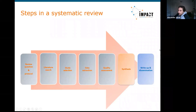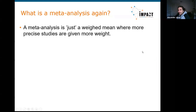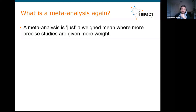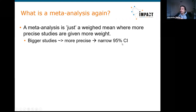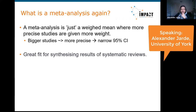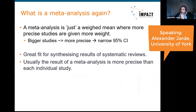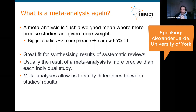So what is a meta-analysis? As you might remember from our last session, a meta-analysis is just a weighted mean where more precise studies are given more weight. Bigger studies or studies with narrower confidence intervals have more weight, since bigger studies are generally more precise. Meta-analyses are a great fit for synthesizing results of systematic reviews, and usually the result is more precise than each individual study. Meta-analyses also allow us to study differences between study results.